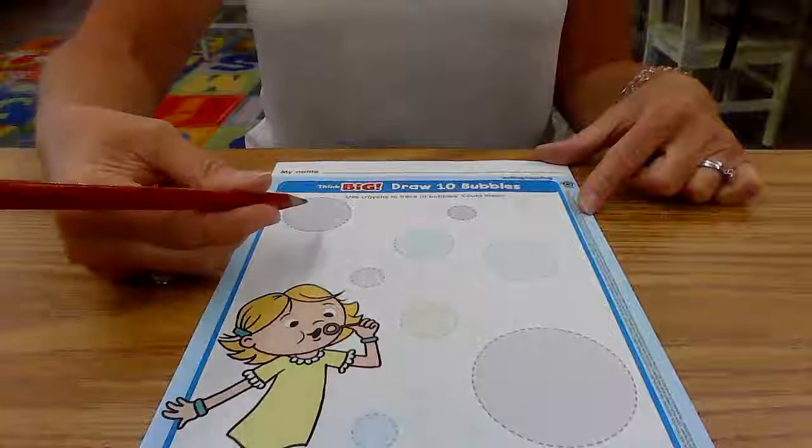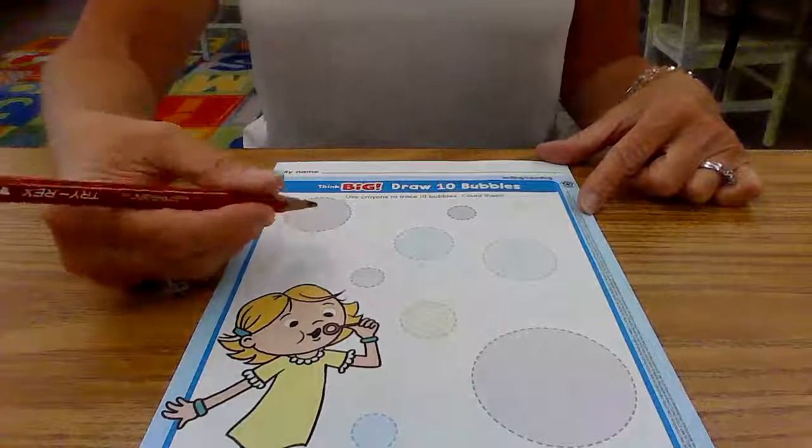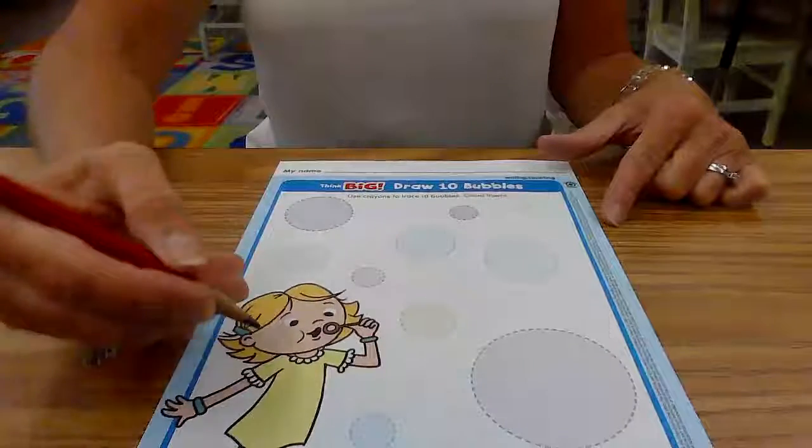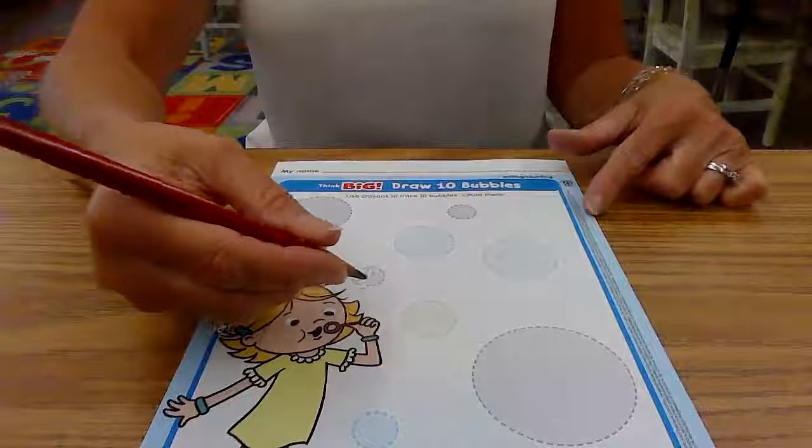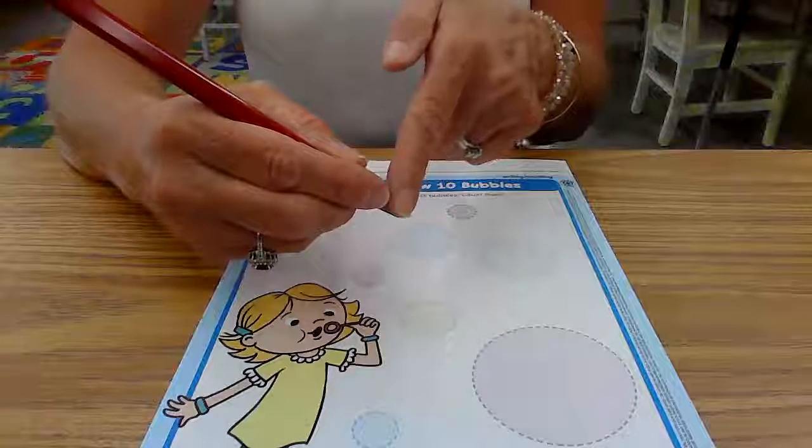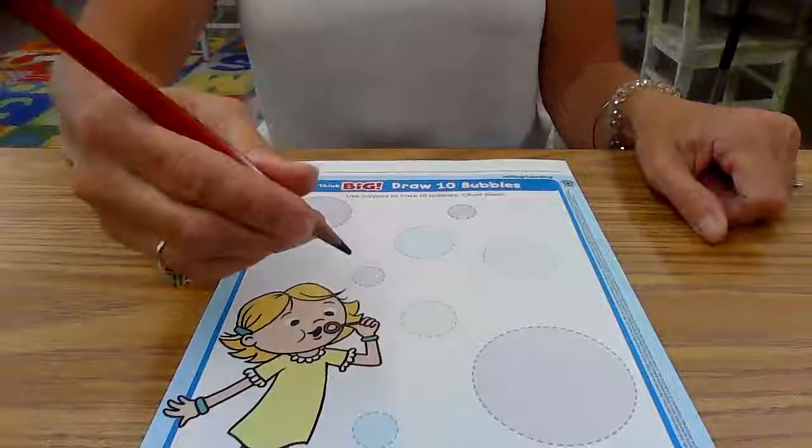Ms. Johnson is using her pencil for her bubbles so you can actually use your pencil or your crayon. Just remember to hold your pencil or crayon correctly. Your pointer finger is going to point down to the tip and tall man is going to use his side.